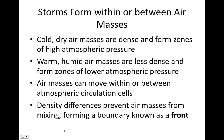Cold and dry air masses are dense and form zones of high atmospheric pressure — meaning stable, good weather. Warm and humid air masses are less dense and form zones of lower atmospheric pressure, because less dense air wants to rise, creating low pressure — and that's typically when you have weather. When two air masses of different densities meet, they don't mix; instead they form a boundary known as a front.